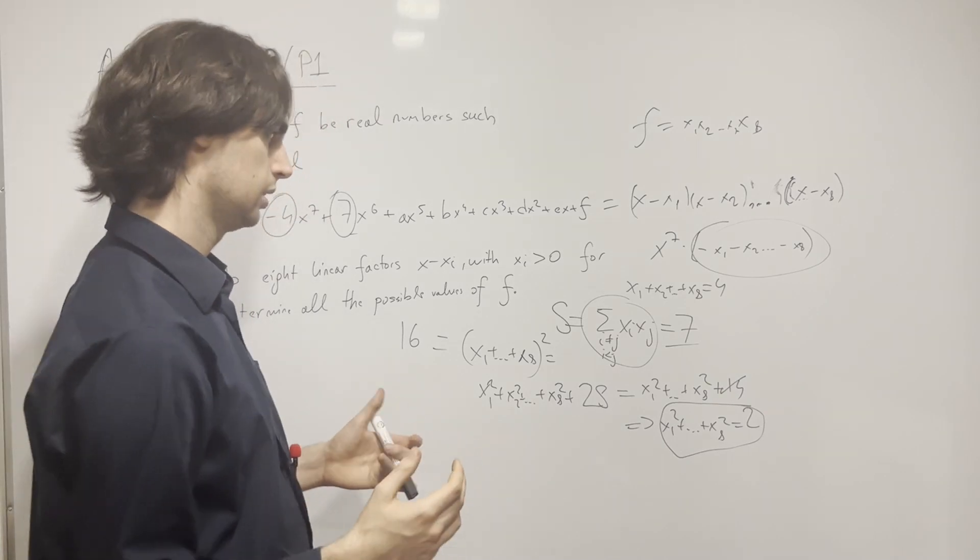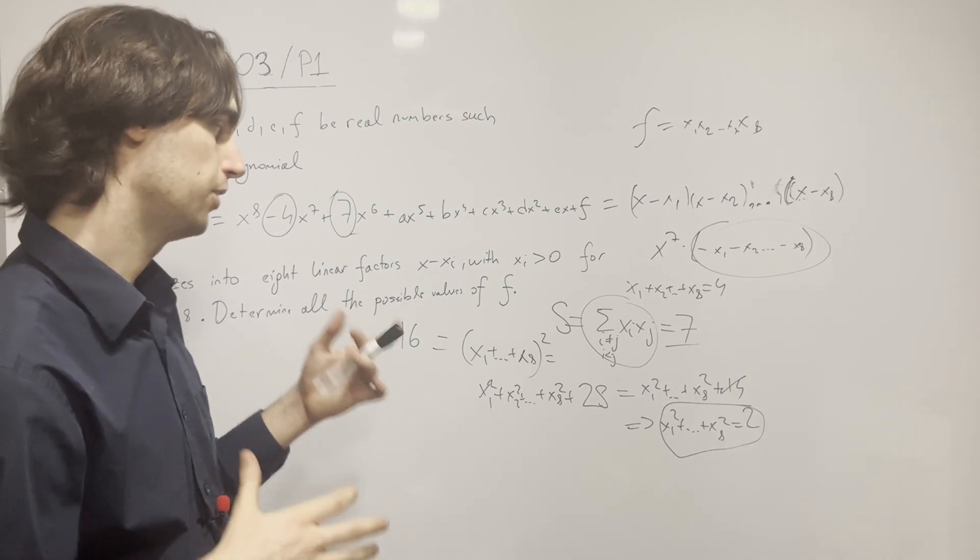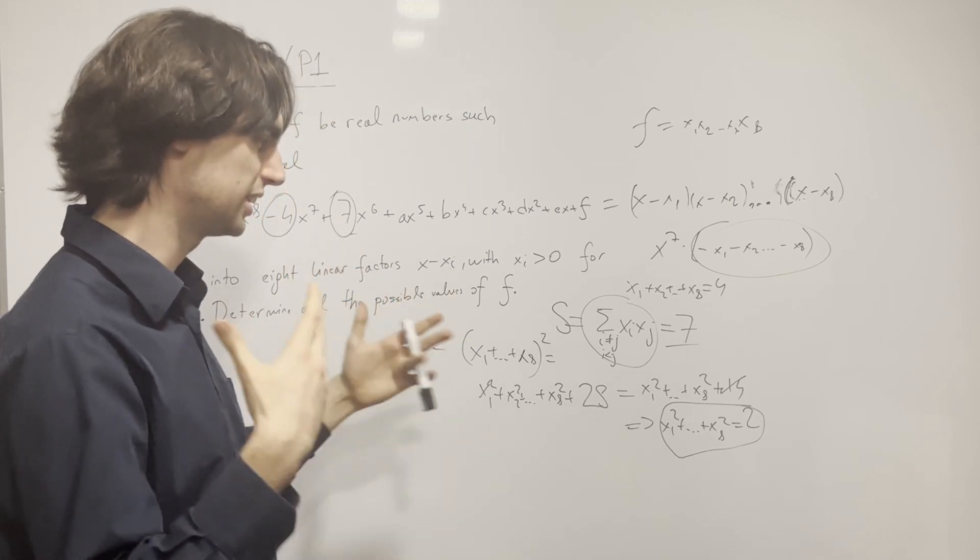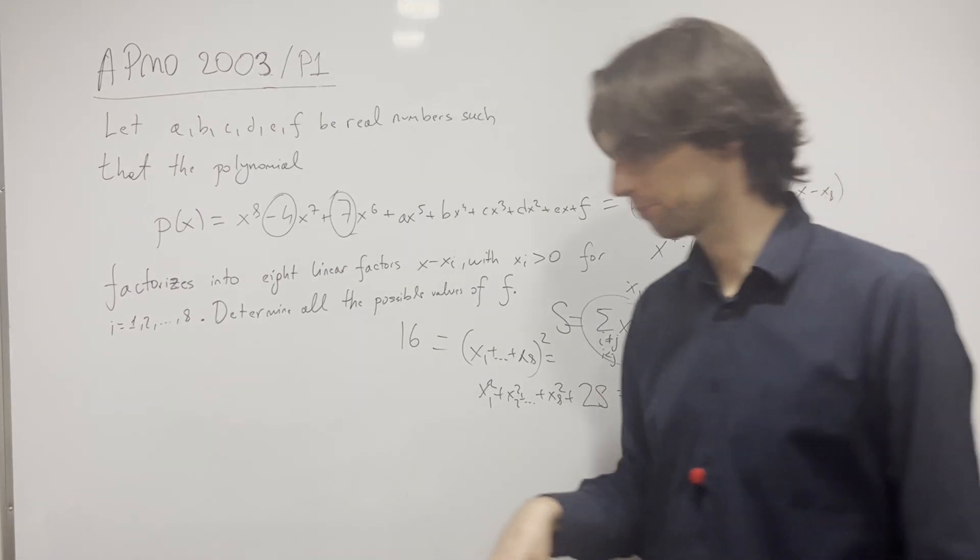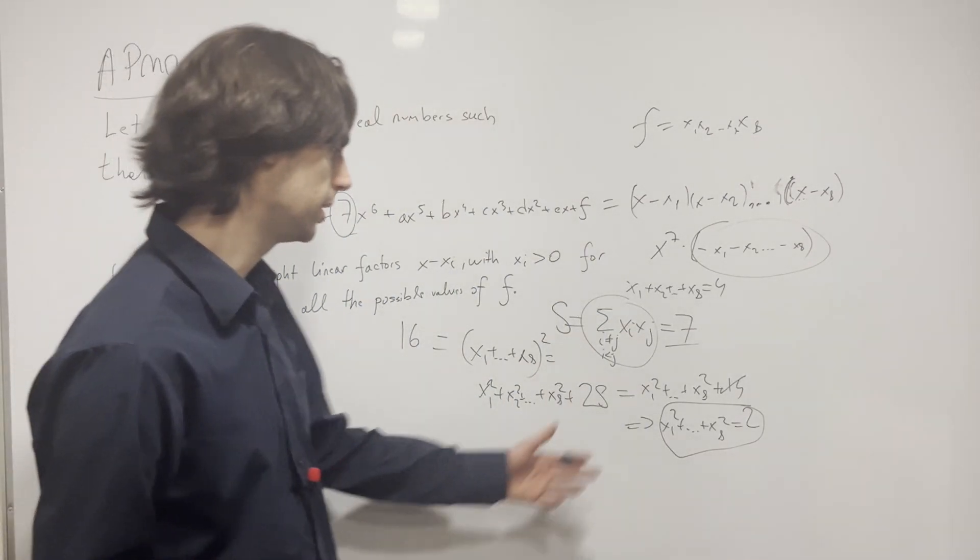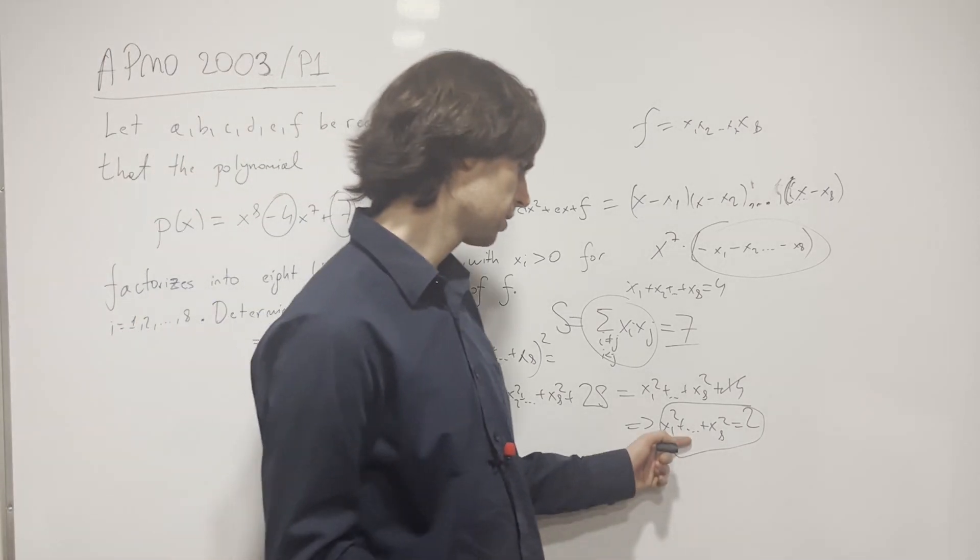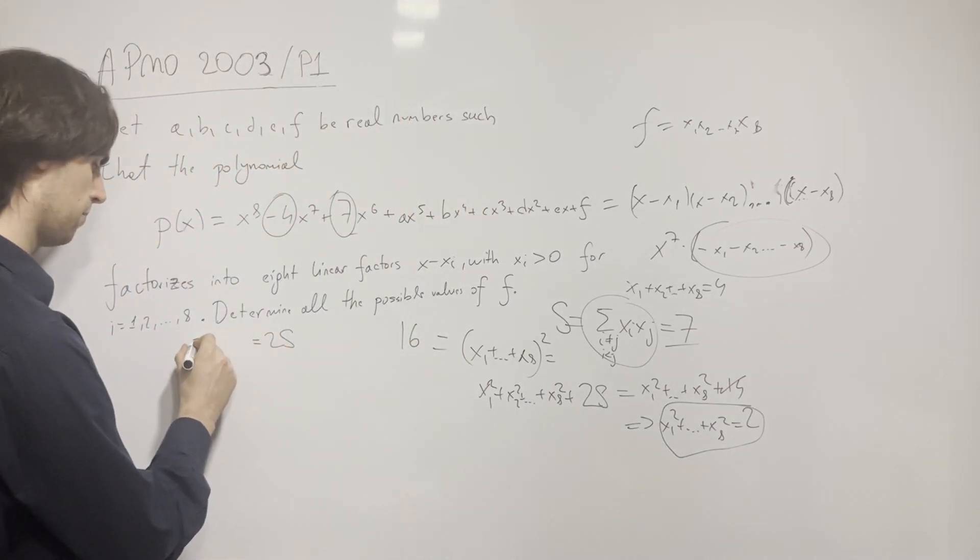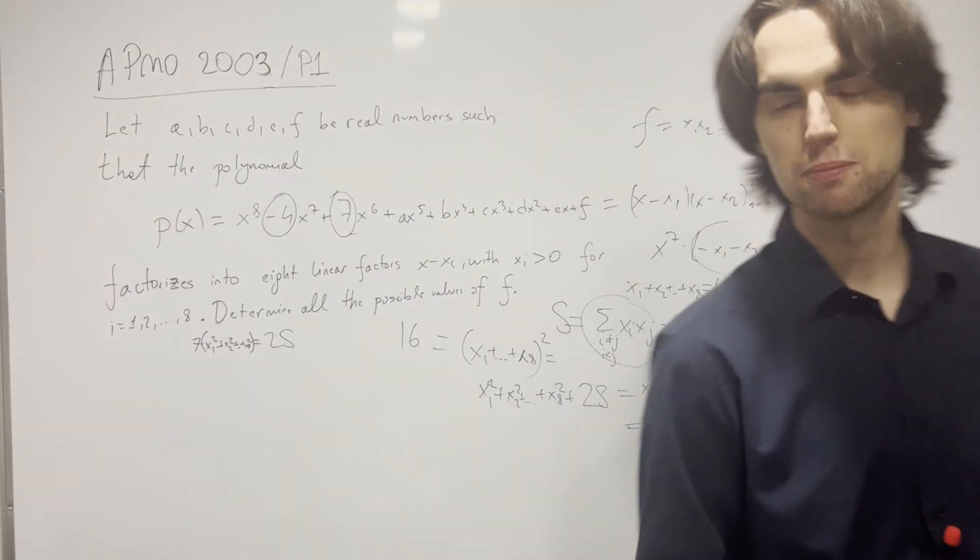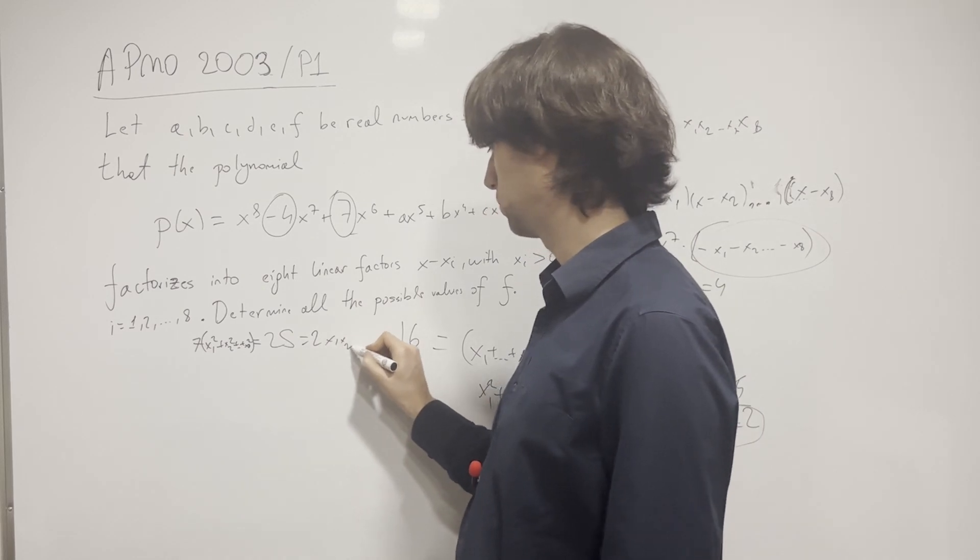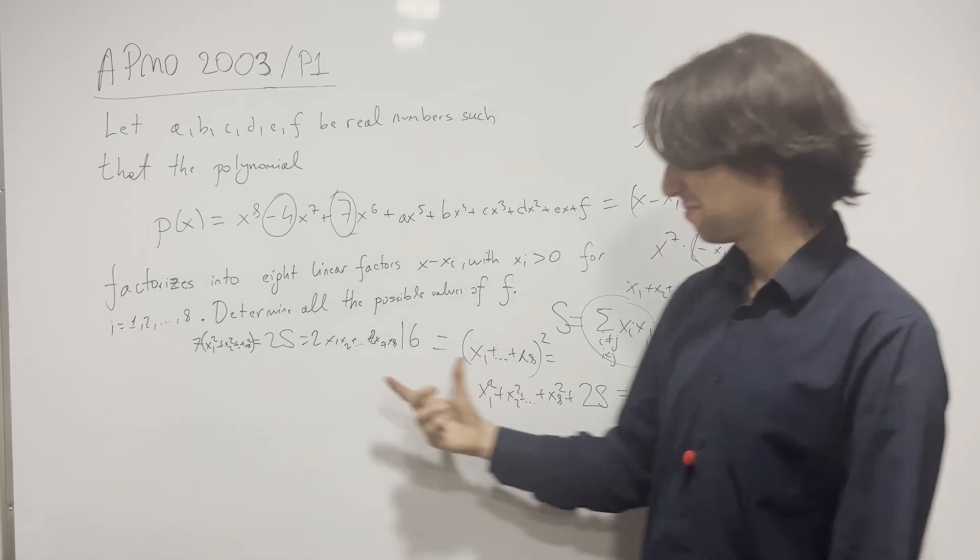Now my question is, does this make sense for this to be true, and this thing to be true, all at the same time? I'd invite you to pause for five minutes and try to see if there's anything you have from here. The answer is, if I do 2 times s, it's going to give me 14. But 14 is also equal to 7 times (x1^2 + x2^2 + ... + x8^2). This is 2 times x1x2 plus all the cyclic ones. Is this really always true?